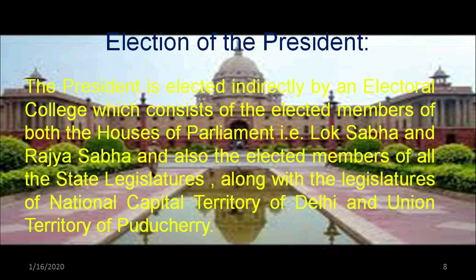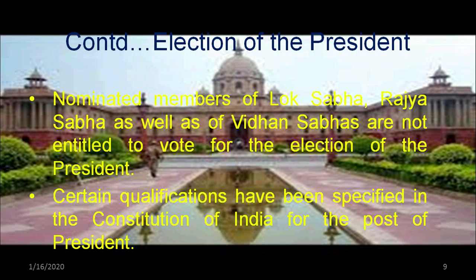The president is elected indirectly by an electoral college which consists of the elected members of both houses of parliament — the Lok Sabha and the Rajya Sabha — and also the elected members of all 29 state legislatures, along with the legislatures of the national capital of Delhi and the union territory of Puducherry. Nominated members of the Lok Sabha, Rajya Sabha, and Vidhan Sabha are not entitled to vote in the presidential election.